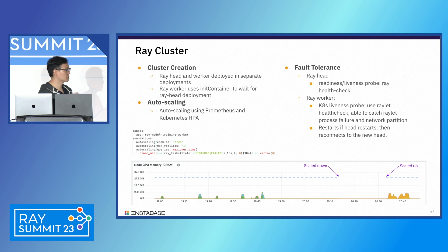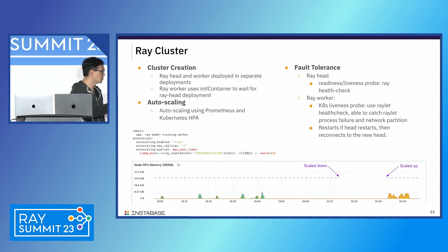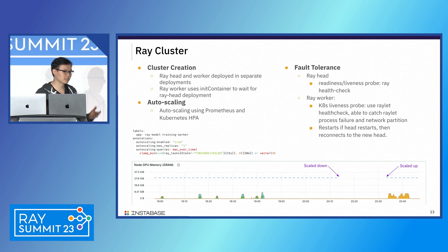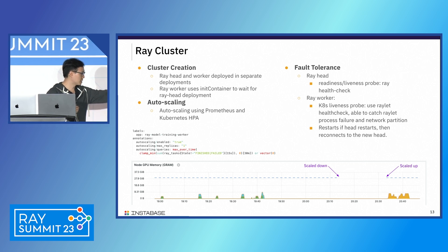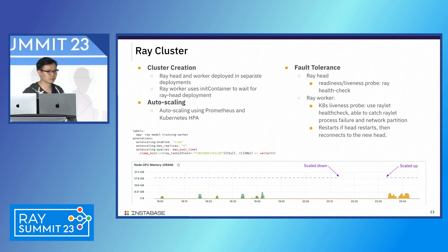We also implement auto-scaling using a combination of Prometheus stats and an in-house auto-scaler controller. We have a metric that tracks over the last 30 minutes whether any jobs are running in the Ray cluster. If not, we scale down. When new jobs are submitted, we scale the workers back up.